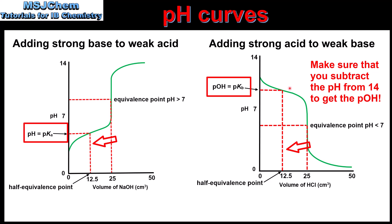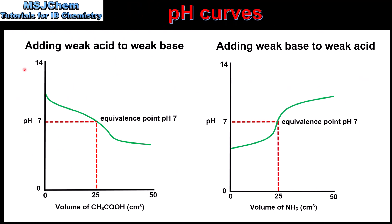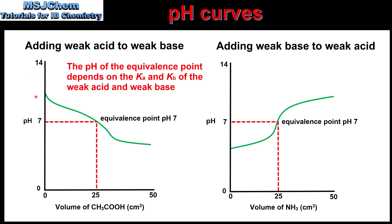Finally, we look at pH curves for weak acids and weak bases. On the left is the curve for adding a weak acid to a weak base, and on the right for adding a weak base to a weak acid. For these examples the equivalence point occurs at approximately pH 7, though this will depend on the specific weak acid and weak base. We don't really see a steep point of inflection — rather we see a gradual change in pH as the weak acid is added to the weak base or vice versa.